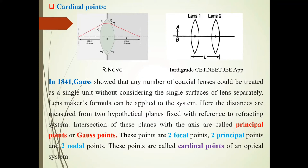To overcome this difficulty of refraction at every surface, from which point we have to measure the distance of image and object, Gauss in 1841 showed that any number of coaxial lenses could be treated as a single unit.